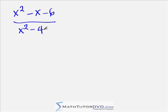Let me rewrite the problem one more time. So what we have is x squared minus x minus 6 divided by x squared minus 4. Now I would like to talk for just a second about why we are able to cancel things from the numerator and denominator of a fraction.